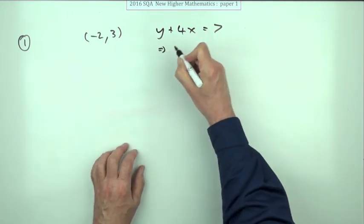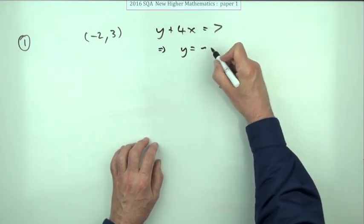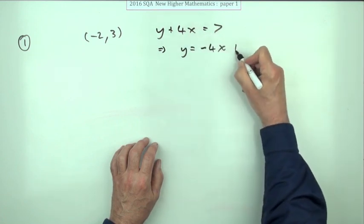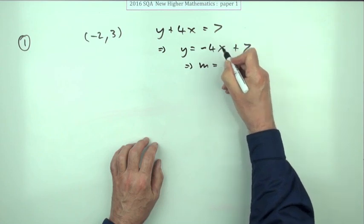So that simply means extract this gradient. So putting it into the required form, y equals mx plus c. Take the 4x across and then you can identify the gradient as that coefficient of x, so the gradient's negative 4.